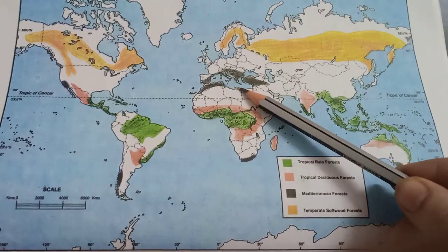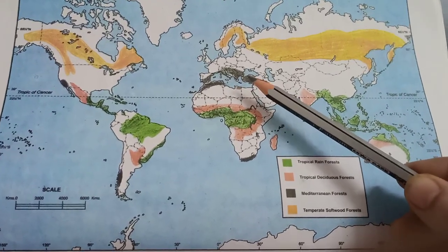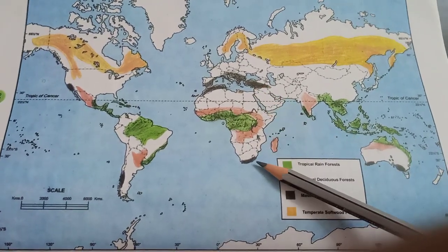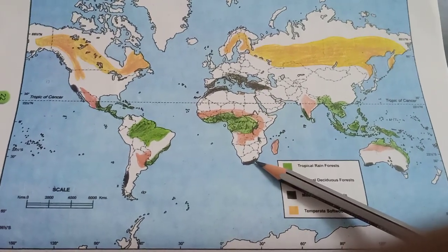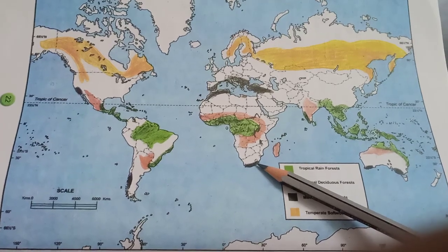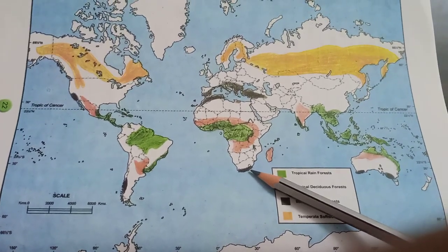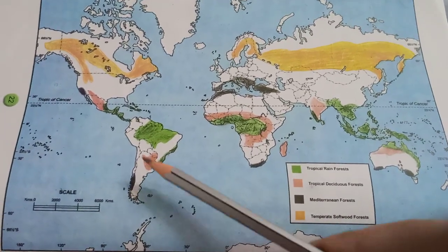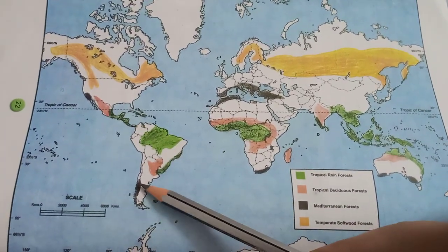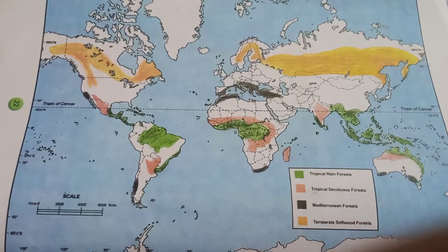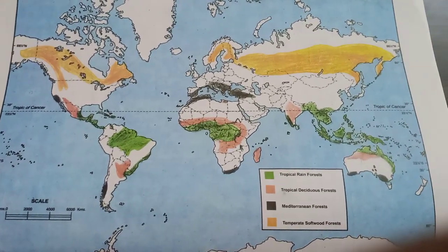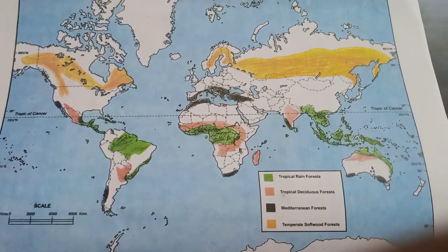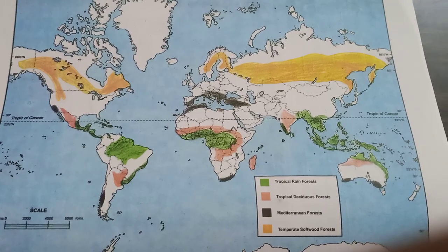Even the southwestern part of South Africa receives Mediterranean-type conditions and has Mediterranean forest. Moving towards the Americas, the western and southwestern part of America also has Mediterranean forest, shown with the black color.